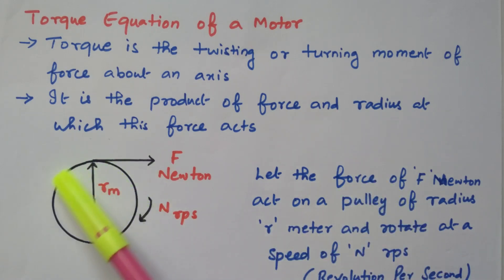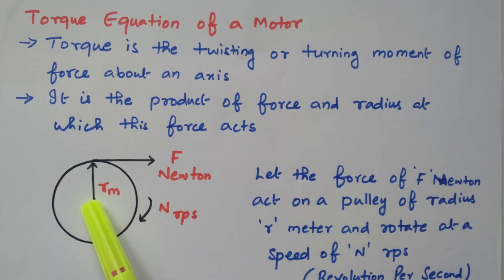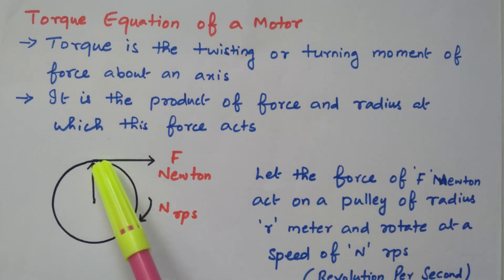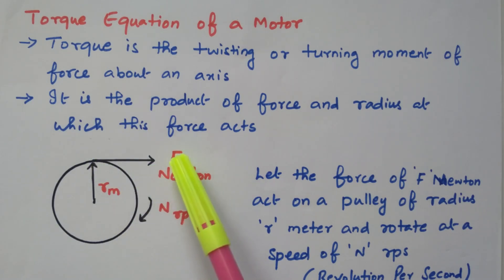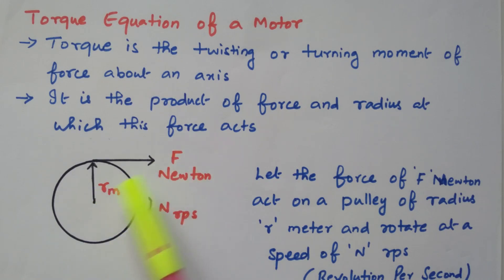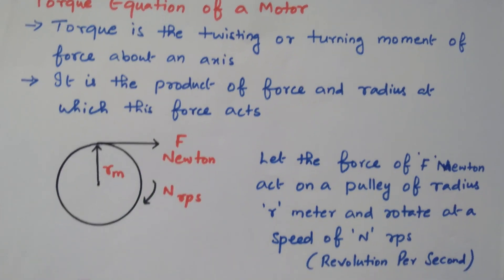Now consider this — this may be a drum, the brake drum of the DC motor. So the radius is Rm, and rotation N is in RPS, revolution per second. The force created is F. So F into Rm is nothing but torque. The force created and the radius together give the torque equation.